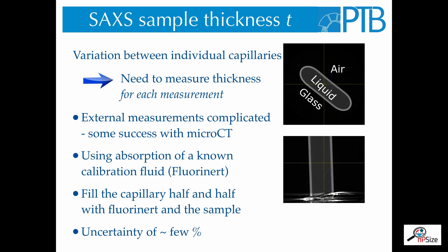But still, we need to measure the sample thickness for each individual measurement, because these capillaries are not all the same. There has been some success by using micro CT to measure the optical path of such a capillary. Of course, micro CT is a lot of effort and we cannot do this for every single measurement. Instead, we use the absorption of a known calibration fluid, fluorinert, which is known to not mix with water. Then, we fill the capillary half and half with fluorinert and the sample under test, and we can determine the optical path via the attenuation of the fluorinert. This allows us to measure the sample thickness with an uncertainty of a few percent.